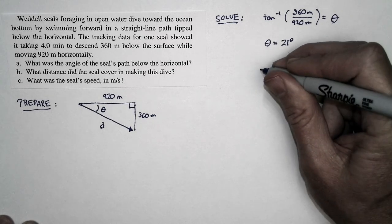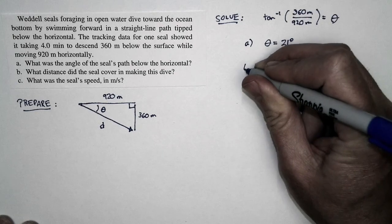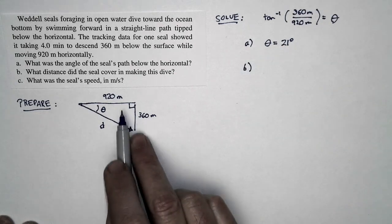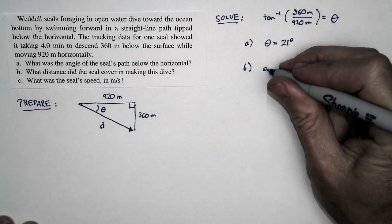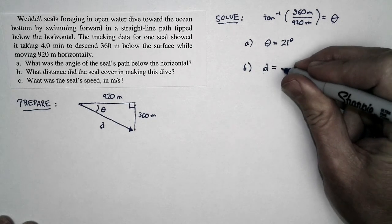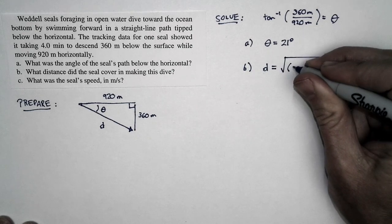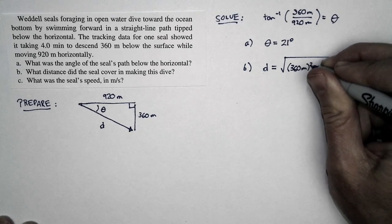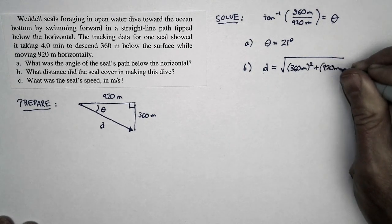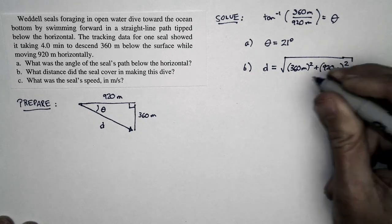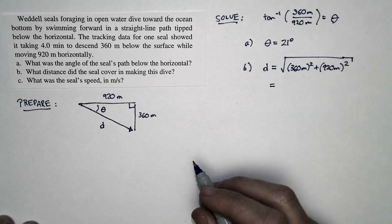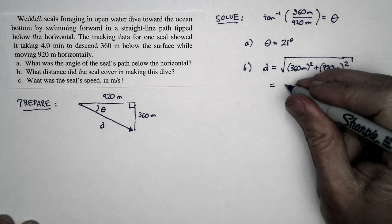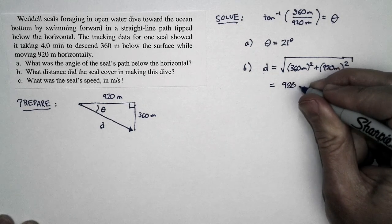How about the distance d? This is a right triangle, and so the hypotenuse is just equal to the square root of the sum of the squares of the other two sides. So it's 360 meters squared plus 920 meters squared, square root of the whole thing. That's something we can easily compute, and if we do that, we get 988 meters.